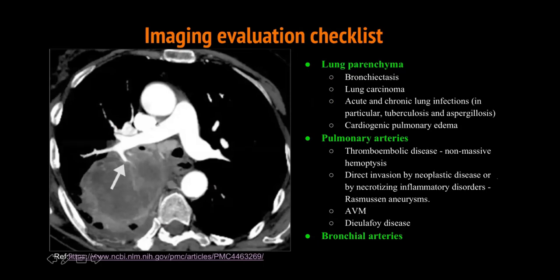The imaging evaluation checklist: look at the lung parenchyma — you'll be able to see the cause, such as bronchiectasis, lung malignancy, or infection. Always remember the common causes for the exam and real life. Then look at the pulmonary arteries — although rare, these can also cause hemoptysis. Thromboembolic disease can cause non-massive hemoptysis, and direct invasion by neoplastic disease can cause massive hemoptysis — for example, a mass invading into right pulmonary artery branches causing massive hemoptysis.